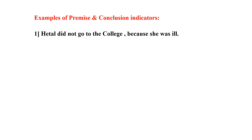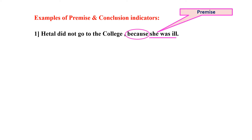What is the premise indicator? The word 'because.' And what is the premise? She was ill. So what will be the conclusion? Hethal did not go to college. This proposition is established on the basis of, on the evidence of, on the support of — she was ill.